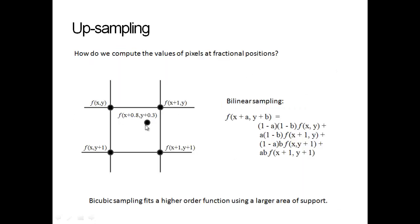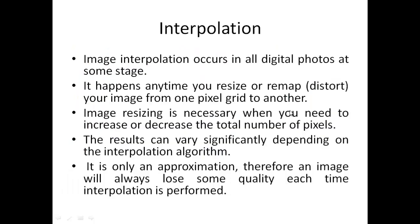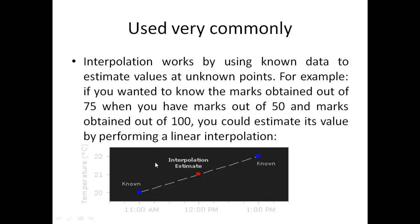There is also nearest neighbor interpolation: for a given pixel, I simply assign it the value of f(x+1, y), its closest neighbor. Then there is bilinear and bicubic interpolation. Linear interpolation assumes a straight line between two known quantities — for example, knowing marks out of 50 and out of 100 to estimate marks out of 75.